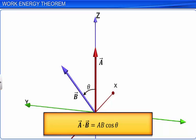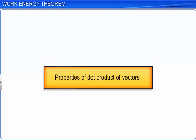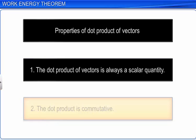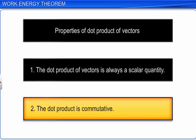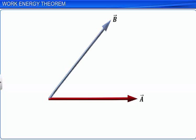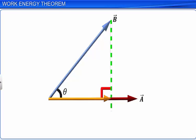Let's see some properties of the dot product of vectors. First, the dot product of vectors is always a scalar quantity. Second, the dot product is commutative. Consider the two vectors A and B inclined as shown, where theta is the angle between the two vectors. The component of one vector in the direction of the other is called the projection of the vector on the other vector.